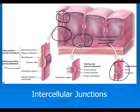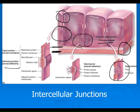This slide also shows us that the basement membrane, while it appears as one layer under the microscope, is actually two layers. The top layer, made by the epithelial cells, is called the basal lamina, and the bottom layer, made by the connective tissue below, is called the reticular lamina.